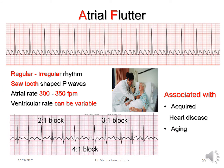Atrial flutter is an irregular rhythm, also associated with acquired heart disease and getting older. What you typically see are saw-toothed P-waves — shaped like shark's teeth. The atrial rate can be 300 to about 350 flutters per minute, and the ventricular rate can be variable. You can have a one-to-one, two-to-one, three-to-one, or four-to-one block depending on the situation. Atrial flutter is very easily recognized by those saw-tooth-shaped P-waves.